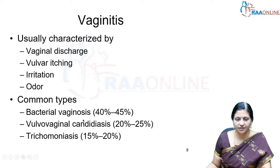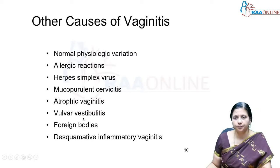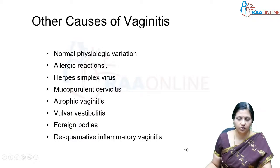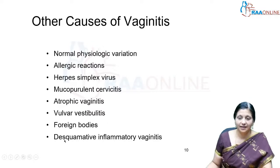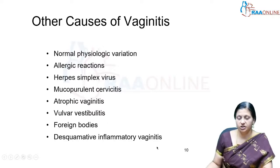Other causes of vaginitis include allergic reactions to cosmetics, herpes simplex, mucopurulent cervicitis, atrophic vaginitis of senility, vulval vestibulitis, foreign bodies in the vagina such as a pessary or a toy, and desquamative inflammatory vaginitis.